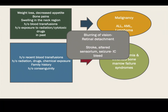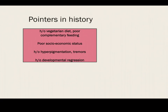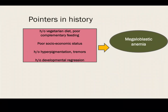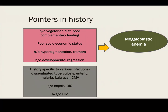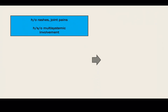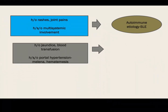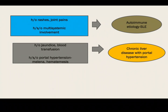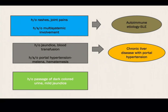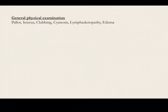If there is history of blurring of vision, stroke, altered sensorium, or seizure, this points towards intracranial bleed. History of vegetarian diet, poor complementary feeding, poor socioeconomic status, hyperpigmentation, tremor, and developmental regression all point towards megaloblastic anemia. History of tuberculosis, enteric fever, malaria, features of sepsis, and DIC points towards infectious etiology. History of rashes, joint pain, or multi-system involvement points towards autoimmune etiology like SLE. History of jaundice, blood transfusion, or portal hypertension signs like melena or hematemesis points towards chronic liver disease. Repeated history of dark-colored urine or mild jaundice, especially during awakening, points towards paroxysmal nocturnal hemoglobinuria.